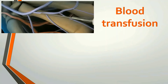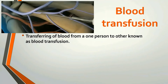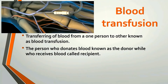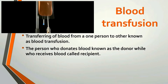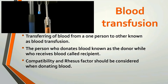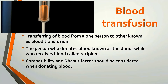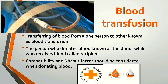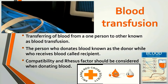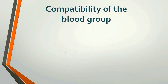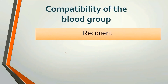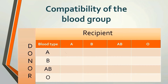Now we can see about blood transfusion. Transferring of blood from one person to another is known as blood transfusion. The person who donates blood is known as the donor, while the one who receives blood is called the recipient. Compatibility and Rh factors should be considered when donating blood. When transferring blood, compatibility of the blood group must be considered.